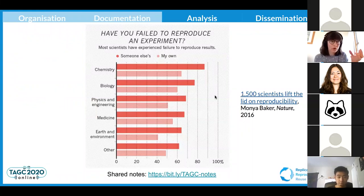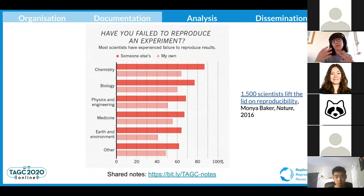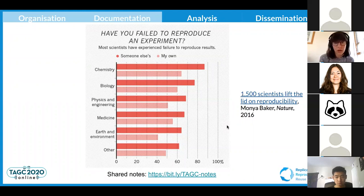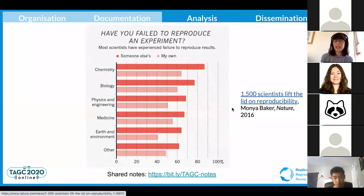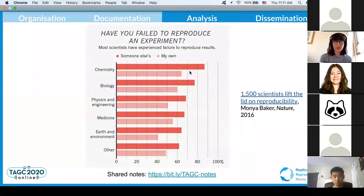This topic is important for a particular type of reproducibility: computational reproducibility, which is essentially the ability to take the data and the code...